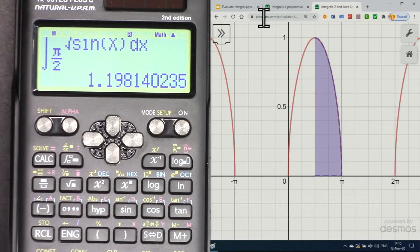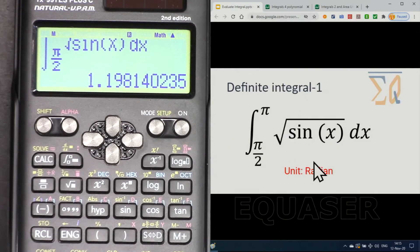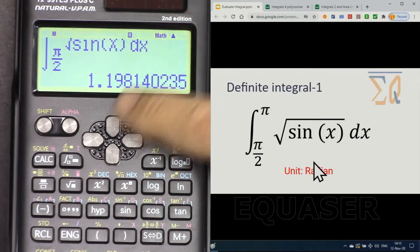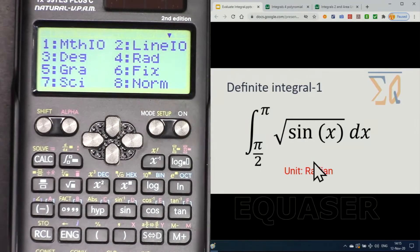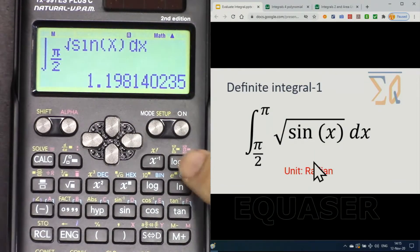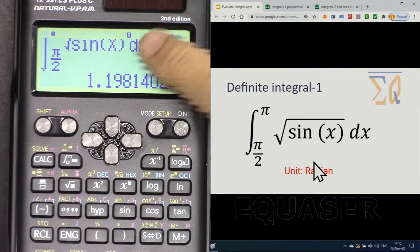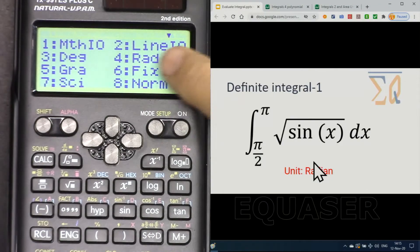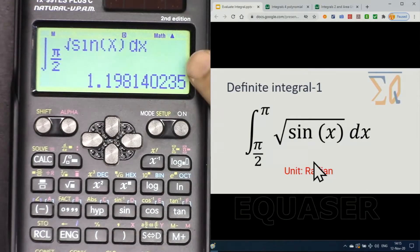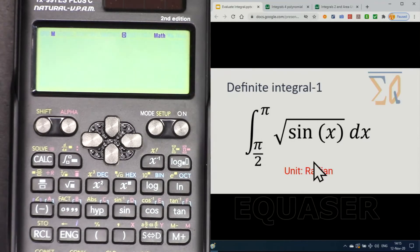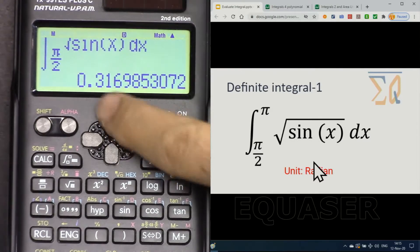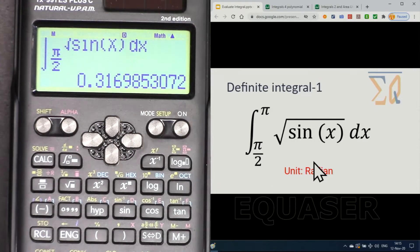If the unit is not radian, you can press shift setup and go to radian, number four. This way you can change the unit and calculation. If you change the unit to degree and press equal sign, you will see that the answer will be different and it will be incorrect—0.31. So that's an incorrect answer, and it was very quick.